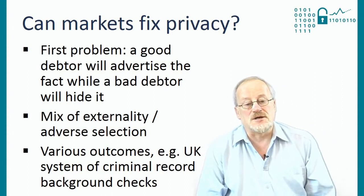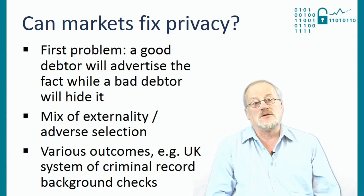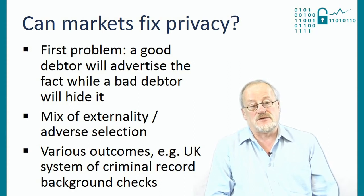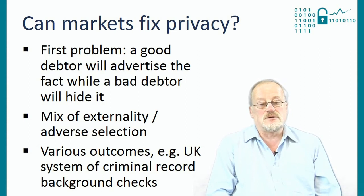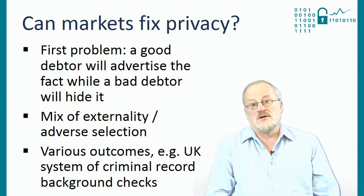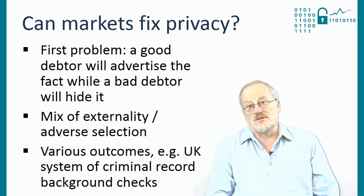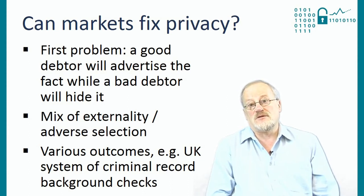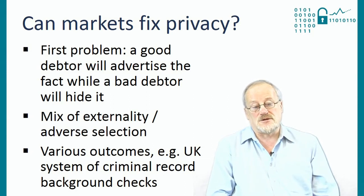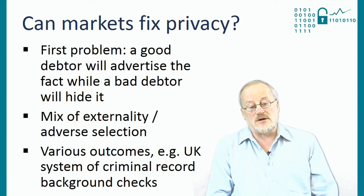The next question is whether markets might fix privacy, because there are several markets involved — the market for personal information and markets for privacy. The first problem, realised by the 1980s, is that if you are a good debtor and always pay your bills, it's in your interest to advertise this fact, whereas a bad debtor will try to hide it. If all good debtors publish their creditworthiness, the bankrupts have nowhere to hide, so you end up with credit reference agencies having information on essentially everybody. There's an interesting mixture of externality and adverse selection here.